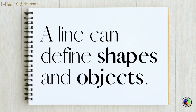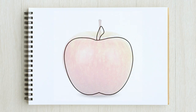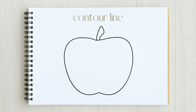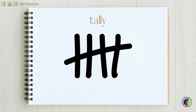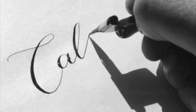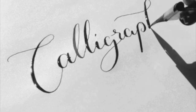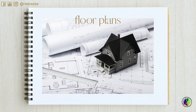Now let's discuss all the ways in which we can use lines. A line can define shapes and objects — the edges or outline of an apple, for example, is known as a contour line. Lines are also used as a form of notation and writing, such as a tally, typography, writing, calligraphy, barcodes, maps, and floor plans.